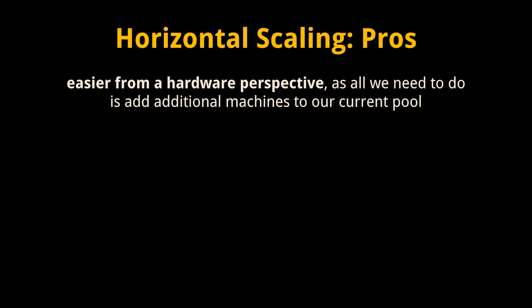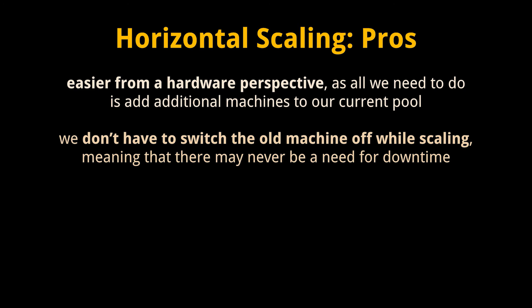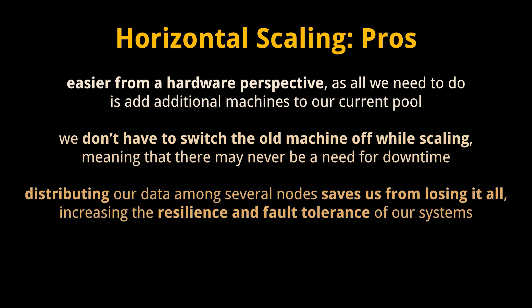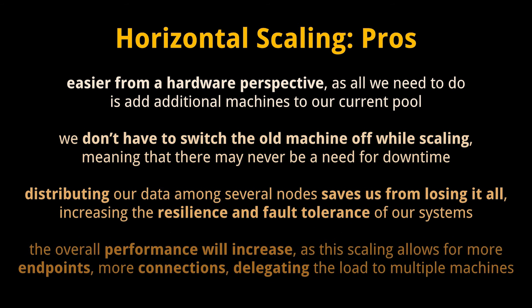Scaling horizontally is easier from a hardware perspective, as all we need to do is add additional machines to our current pool — it eliminates the need to analyze which system specifications to upgrade. Because we're adding machines, we don't have to switch the old machine off while scaling, which means there may never be a need for downtime and clients are less likely to be impacted. Relying on a single node puts us at high risk of losing everything when it fails; distributing data among several nodes increases the resilience and fault tolerance of our systems. The overall performance will also increase, as horizontal scaling allows for more endpoints and connections that delegate the load among multiple machines.